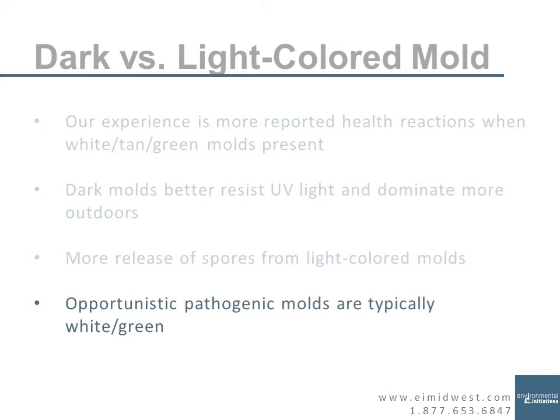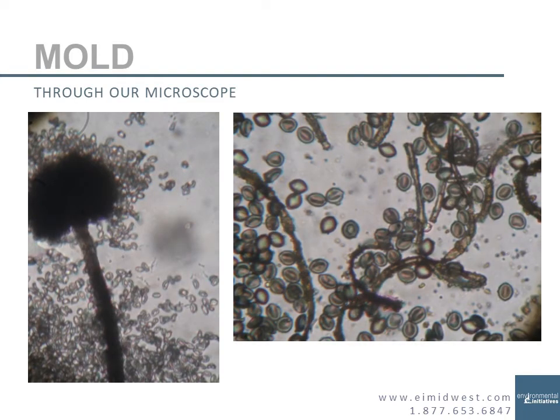Most of the opportunistic pathogen molds — the molds that will grow and infect people who have lowered immune systems — are light colored versus dark colored, so we care more for that reason as well. Light colored molds per square inch have far more mold spores that want to release from air flow. Here's a light colored mold on the left, aspergillus — you can see all those little white dots, those are all spores — and they're far smaller than the brown mold spores from chaetomium on the right. So you simply have a lot more spores that want to release per square inch for light colored molds.